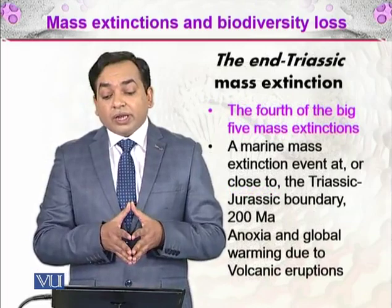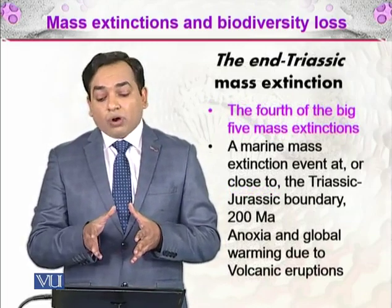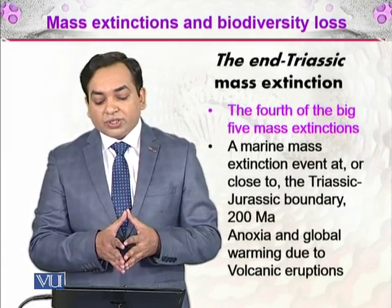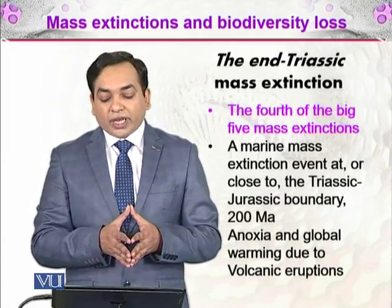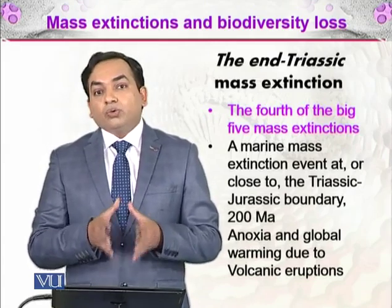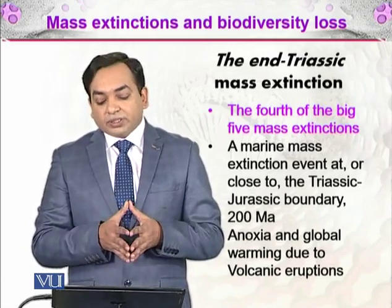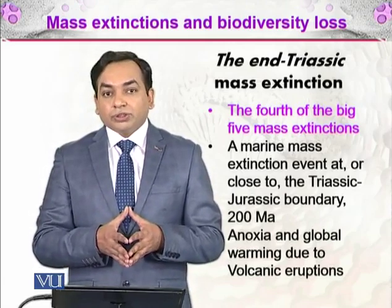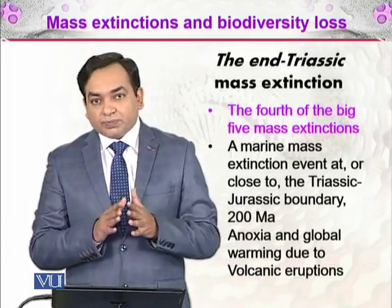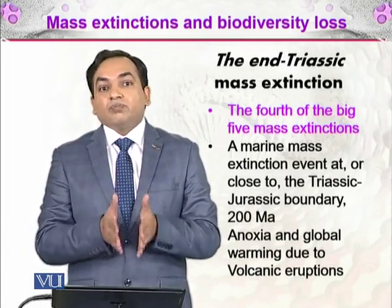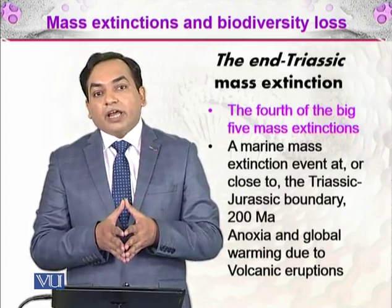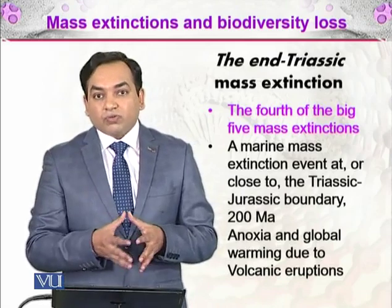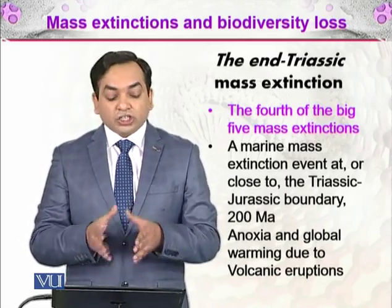The End Triassic mass extinction was the fourth of the big five events — a major marine mass extinction at or close to the Triassic-Jurassic boundary, approximately 200 million years ago. Anoxia and global warming caused by volcanic eruptions played a key role. The expanding Atlantic Ocean drove volcanic activity, increasing carbon dioxide accumulation, leading to climate change and extinction.